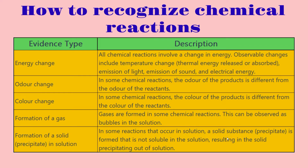The second type of evidence is odor change: in some chemical reactions, the odor of the product is different from the odor of the reactants, so if you can smell a difference, there could be a chemical reaction. The third is color change: in some reactions, the color of the product is different from the color of the reactant. The fourth is formation of gas: gases are formed in some chemical reactions, which can be observed as bubbles inside a solution.